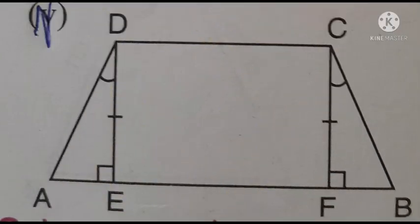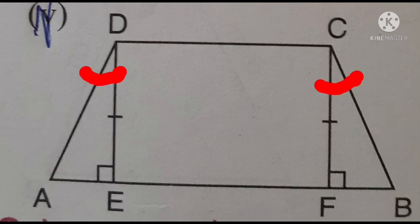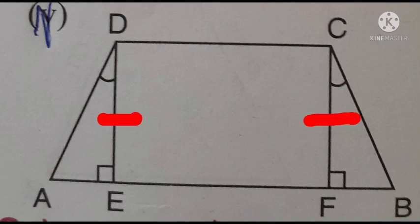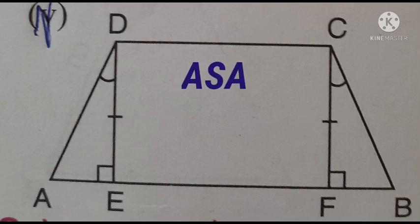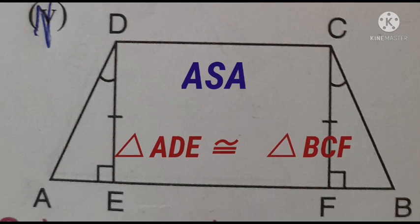Now I am going to discuss one more example. Here you see that in triangle ADE and in triangle BCF, angle ADE is equal to angle BCF, angle DEA is equal to angle CFB, and DE equal to CF. So as per the criteria of ASA, triangle ADE is congruent to triangle BCF.